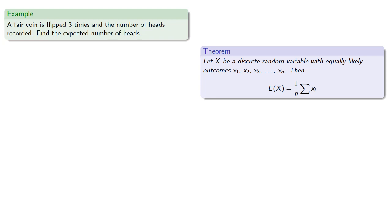Or, say a coin is flipped three times and the number of heads recorded, let's find the expected number of heads. And since the possible outcomes, the number of heads could be 0, 1, 2, or 3,